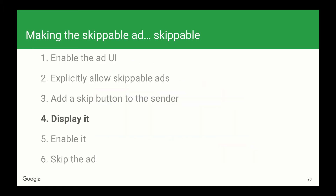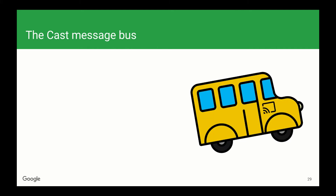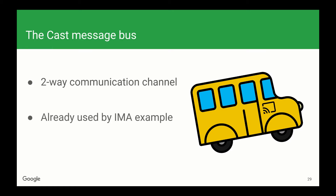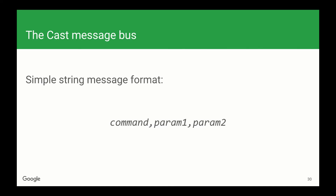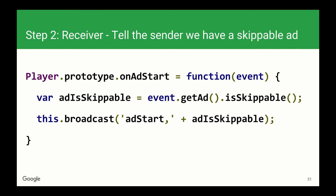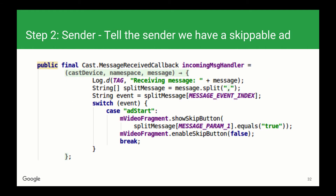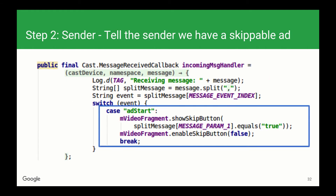Now we need to display the skip button when we get a skippable ad. To do this, we're going to use the Cast message bus. This is a two-way communication channel between the receiver and the sender that lets them pass simple string messages back and forth. We already used this in the advanced example to disable seeking controls while an ad is playing, so we'll just expand on that implementation here. We're going to use a comma-separated string to specify our command, followed by any parameters required by the sender or receiver. We'll add an onAdStart method on the receiver, which checks whether or not the SDK returned a skippable ad, then send the adStart command to the sender with one parameter — true if we have a skippable ad and false if non-skippable. On the sender, we'll listen for the adStart command and call showSkipButton with the parameter sent by the receiver and disable the skip button.